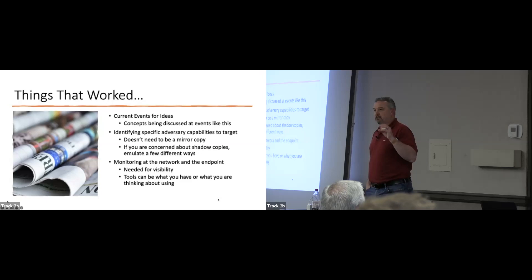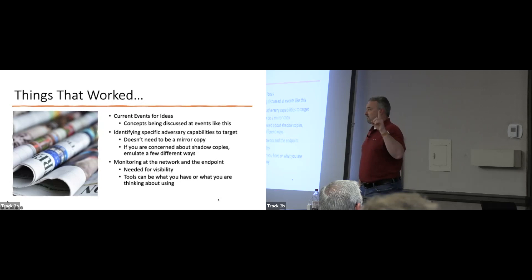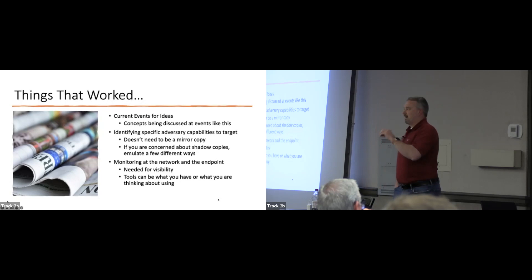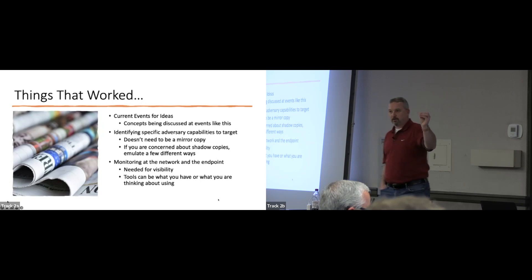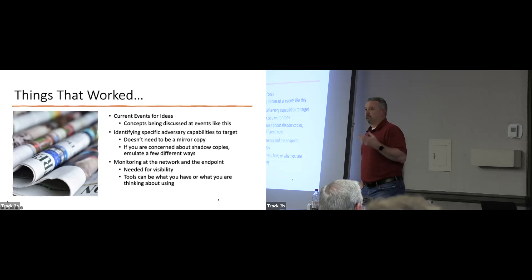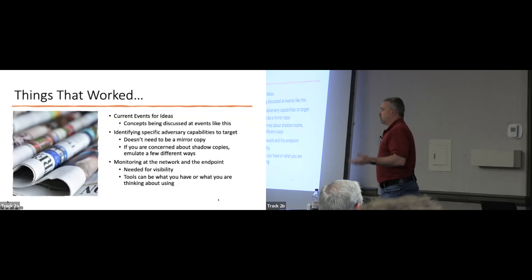Don't worry about making it a mirror copy of the adversary. How many ways are there to get to a shadow copy? VSS admin is one, but we could probably go around the room and find a few more. Expose your analysts to different things — don't keep going back to the same well. We're not trying to crack in and get to the flag; we're trying to show them the different ways somebody can get to the ntds.dit file, exposing them to those different things so they can recognize the pattern.